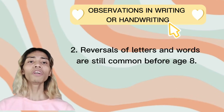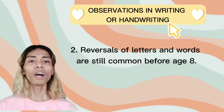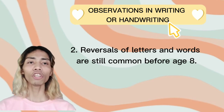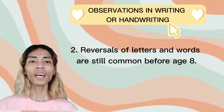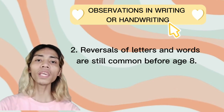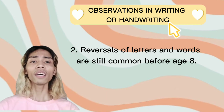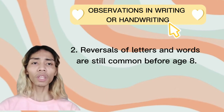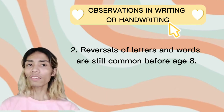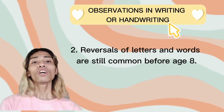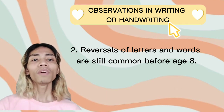Second observation: reversals of letters and words are still common for children up to age eight. The reason for this has been suggested to be poor working memory and also a lack of visual processing. But this does not mean that your child has a learning difficulty.